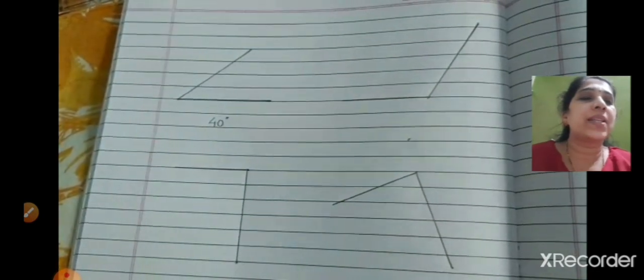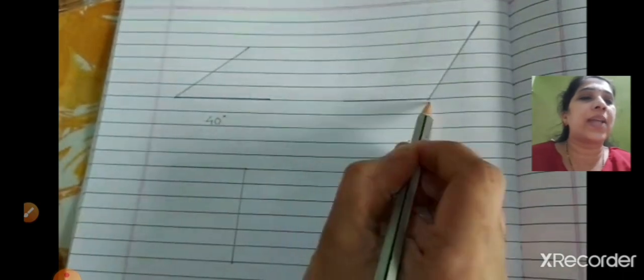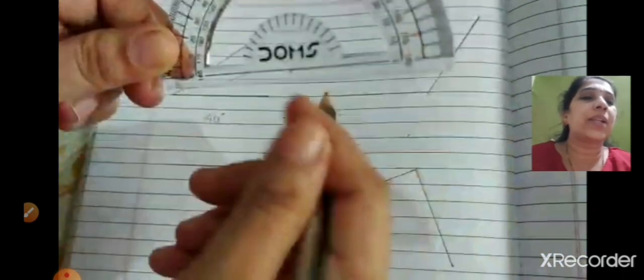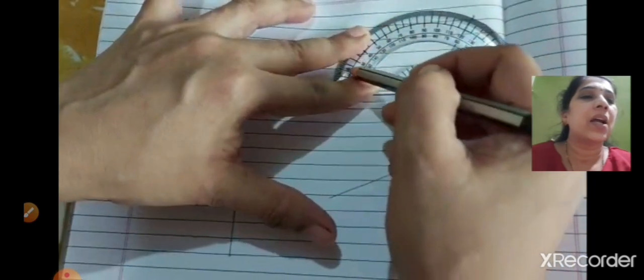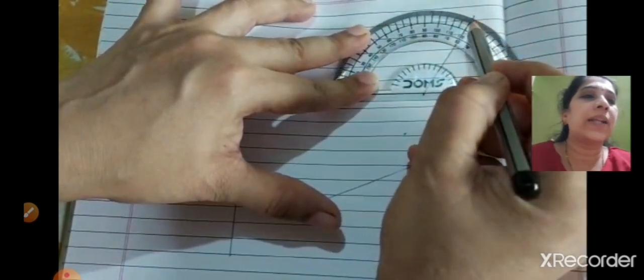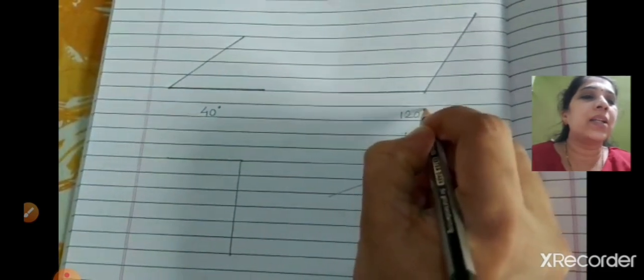Looking at the second figure, you can identify it's an obtuse angle. Again keep the center of the protractor at the common point and count from the left: 180, 170 — it comes to 120 degrees. Write it as 120 degrees.